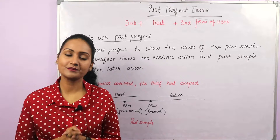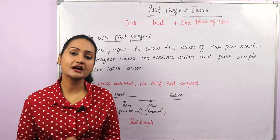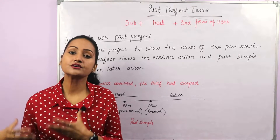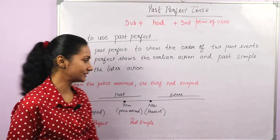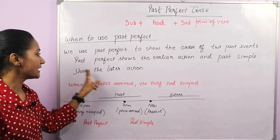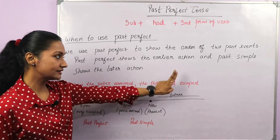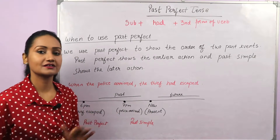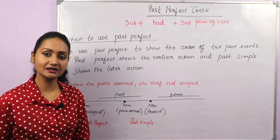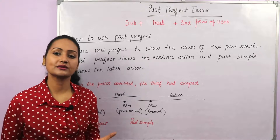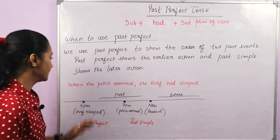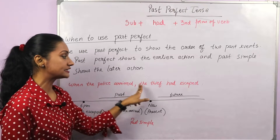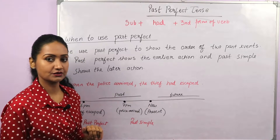Where do we use past perfect tense? We use past perfect tense to show the order of two past events. Past perfect shows the earlier action and past simple shows the later action. Let's understand it with an example: 'When the police arrived, the thief had escaped.'